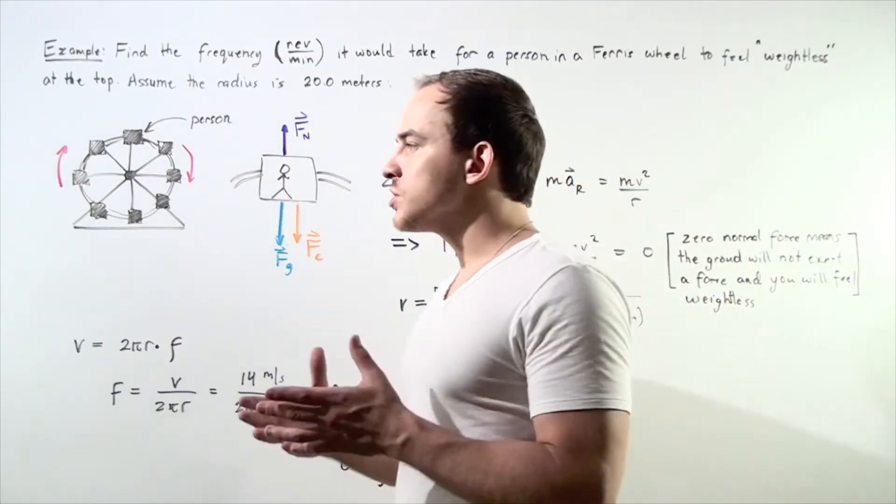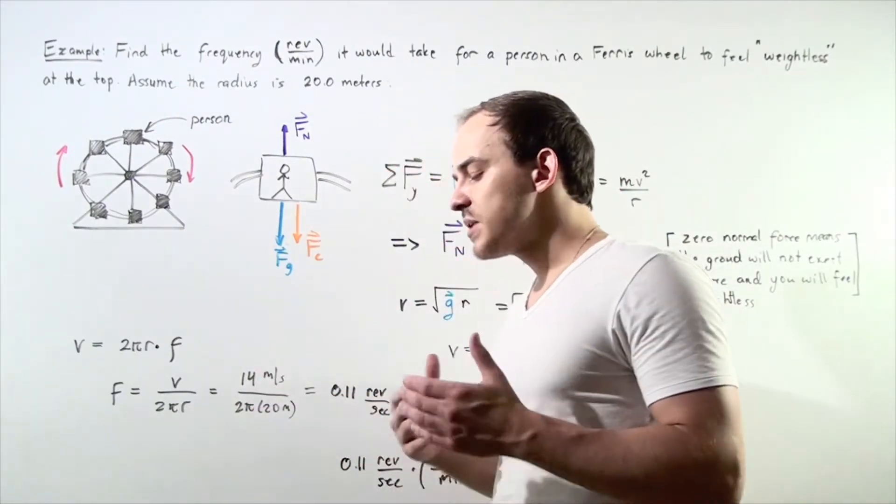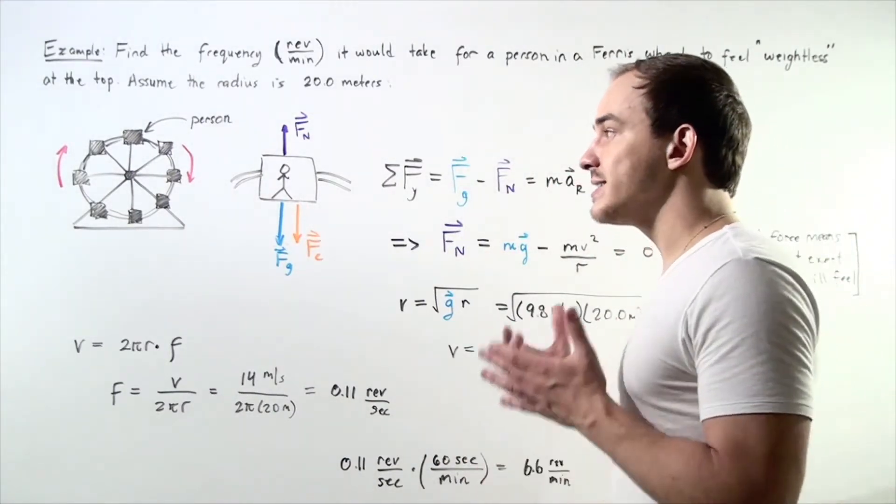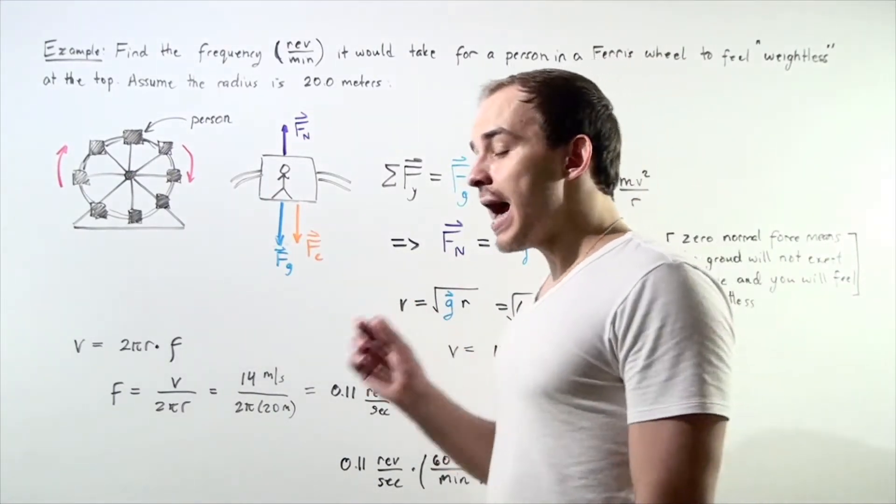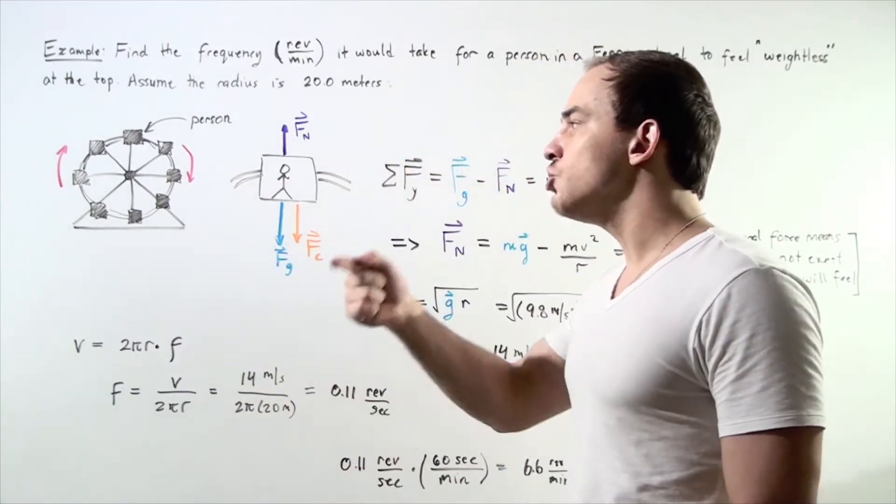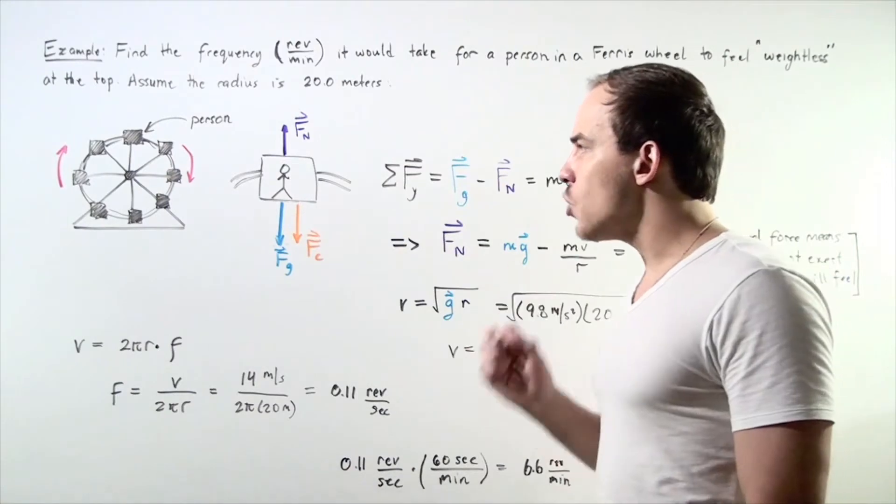Let's suppose that a person gets inside a Ferris wheel and the Ferris wheel begins to rotate with a constant speed. That means our person inside the Ferris wheel is undergoing uniform circular motion.